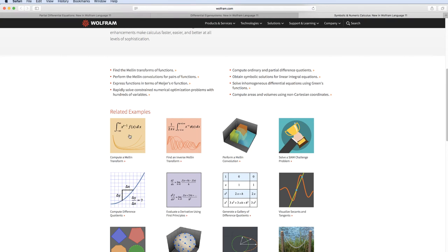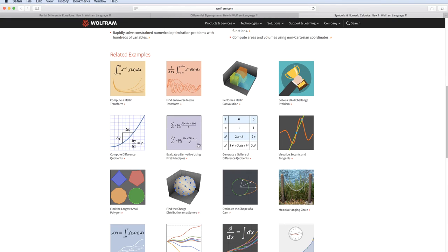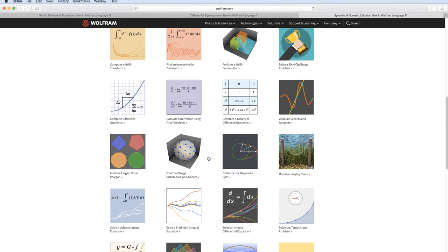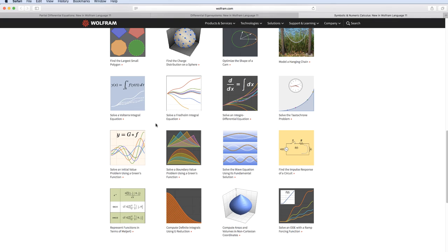So there are many more beautiful examples on the feature page for symbolic and numeric calculus. We have the Mellon transforms over here. Difference quotient. Find minimum. Integral equations. Green's function. And then the so-called MeijerG reduce, which tries and expresses functions in terms of MeijerG. So again, we have a wonderful collection of elementary and advanced functions for symbolic and numeric calculus.